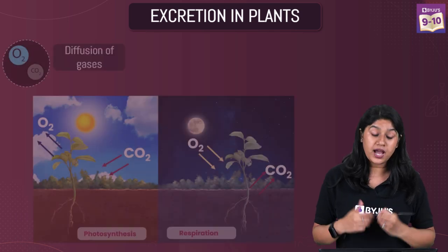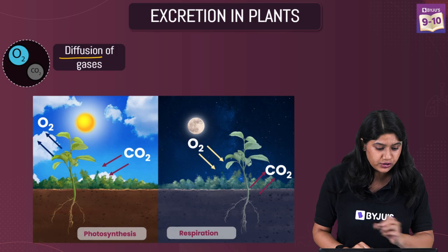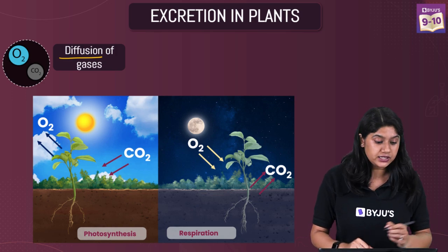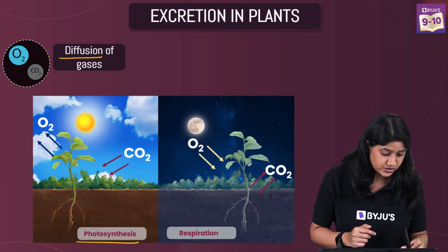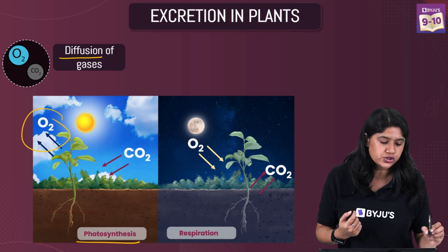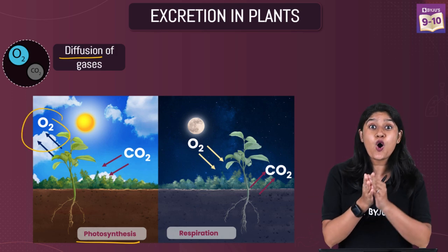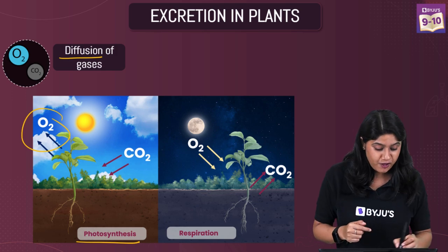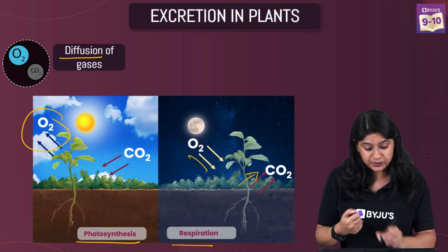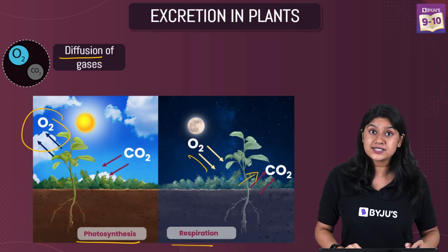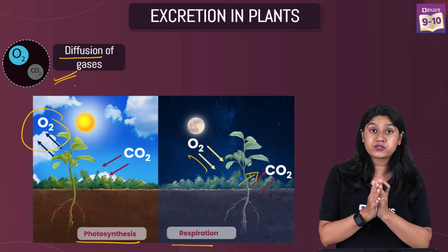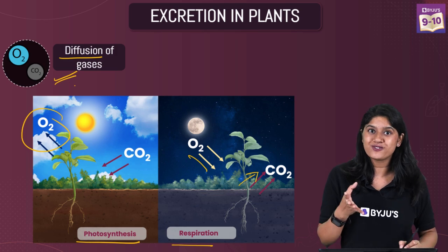The next way is the diffusion of gases. In plants we see the exchange of gases. During photosynthesis, plants take up carbon dioxide and release oxygen — here oxygen is the waste product. In the case of respiration, plants take up oxygen and release carbon dioxide, making carbon dioxide the waste. So we see excretion of different gases through the process of diffusion.